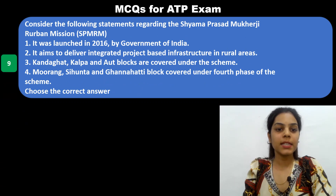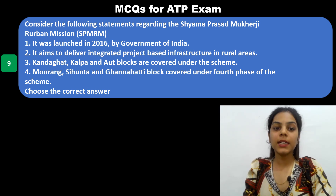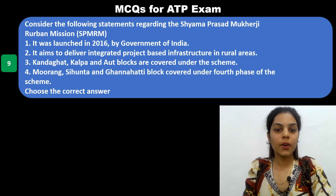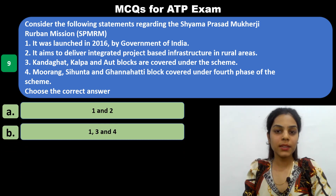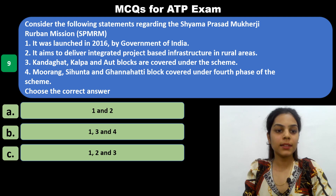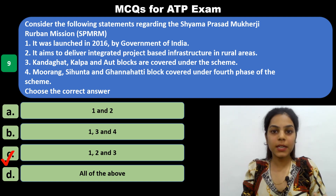The ninth MCQ presents four statements about SPMRM: one — it was launched in 2016 by the Government of India; two — it aims to deliver integrated project-based infrastructure in rural areas; three — Kanda Ghat, Kalpa and Aut blocks are covered under the scheme; four — Moorang, Sihuta and Ganha Hatti block are covered under the fourth phase of the scheme. You have to choose the correct statements. The answer is statements one, two and three are correct. The fourth statement — regarding the fourth phase — is not included.